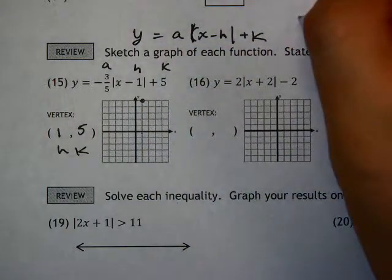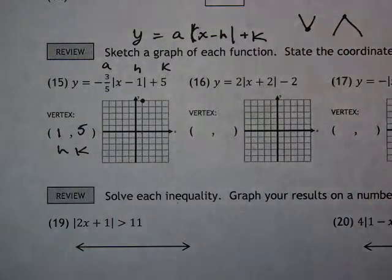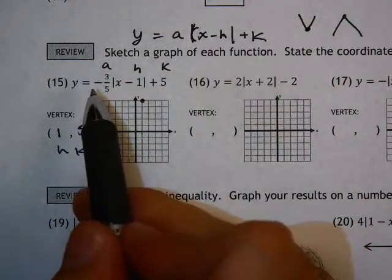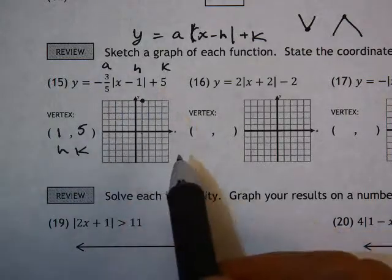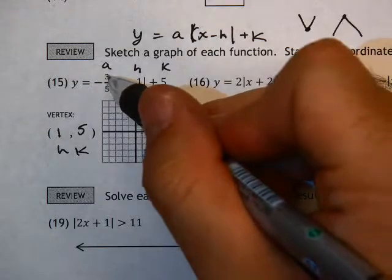Now remember, the vertex is either the lowest point on that V or the highest point. Since the A value is negative, this is going to point downwards. And it works a little bit like slope—it's kind of like rise over run.